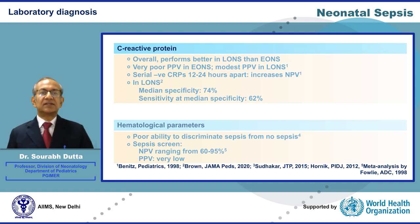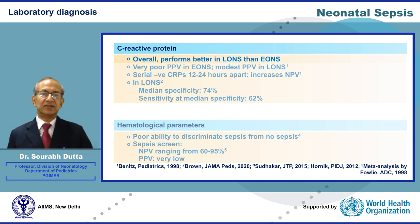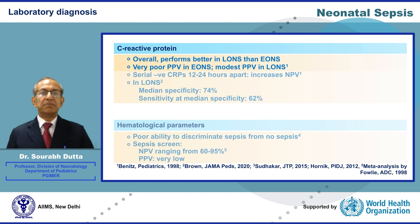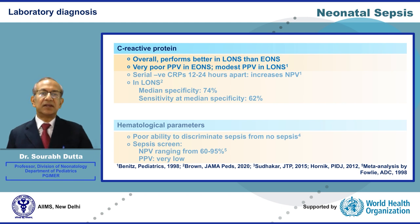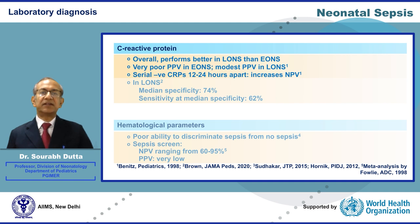C-reactive protein starts rising at 6 to 12 hours after the onset of infection and peaks at 2 to 3 days. CRP performs better as a diagnostic test in late onset Sepsis than early onset Sepsis, with very poor positive predictive value in early onset Sepsis. Therefore, the decision to give antibiotics in the first few days of life must not be guided by a positive CRP. In late onset Sepsis, the positive predictive value of CRP is better but still at best modest. Performing serial CRPs 12 to 24 hours apart is better than relying upon a single CRP. Serial negative CRPs increase the negative predictive value — if two or three CRPs are negative, it is much better able to rule out Sepsis.